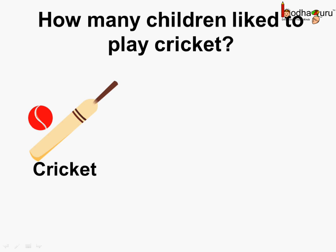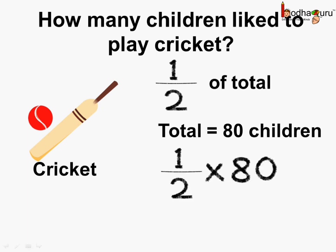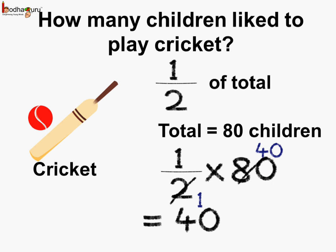If we want to figure out how many children like to play cricket, as we saw in the chart, half of the total like to play cricket and the total number of children were 80. So we will figure out half of 80, which means 1 by 2 multiplied by 80. Reducing it: 2 ones are 2, 2 forties are 80, so we get 1 multiplied by 40 which is 40. So 40 children like to play cricket.